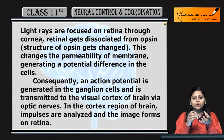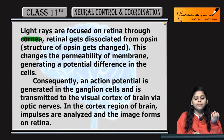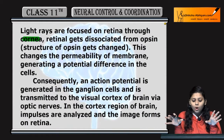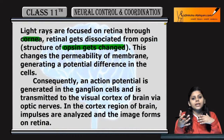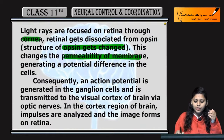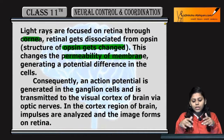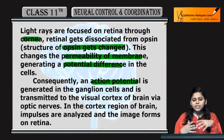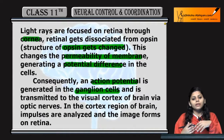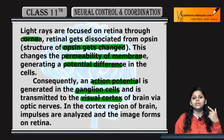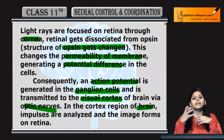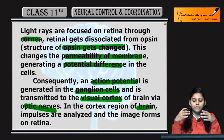Light rays enter and are focused on the retina. A potential difference is generated in the retina, which is then transmitted to the visual cortex of the brain. In the visual cortex region, the brain analyzes the impulses and an image is created, which we perceive as sight.